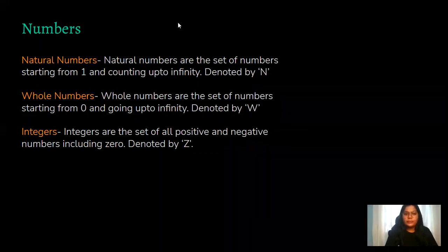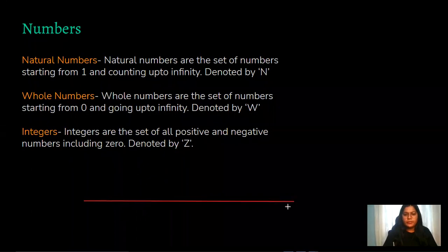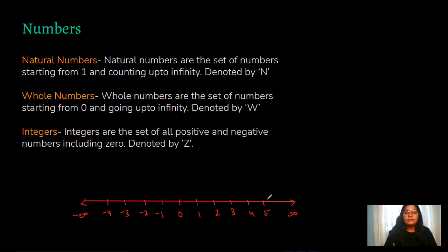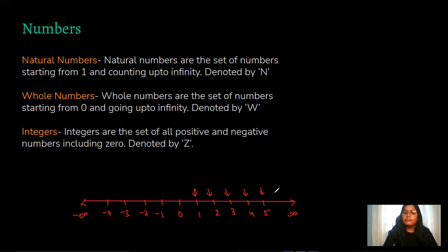Let us draw a number line to understand this. On the number line, zero is at the center, with positive numbers one, two, three, four, five going to the right towards positive infinity, and negative numbers negative one, negative two, negative three, negative four going to the left towards negative infinity. Natural numbers start from one — just the positions one, two, three, four, with no numbers in between — going on till infinity.